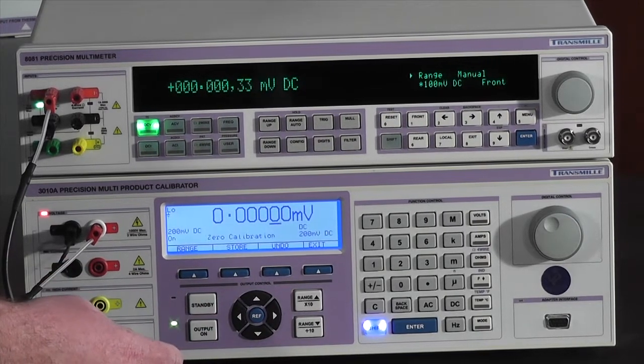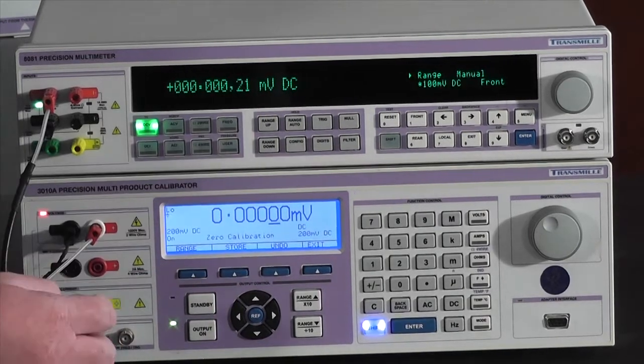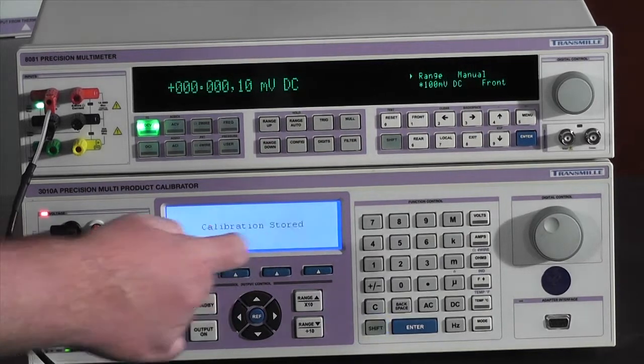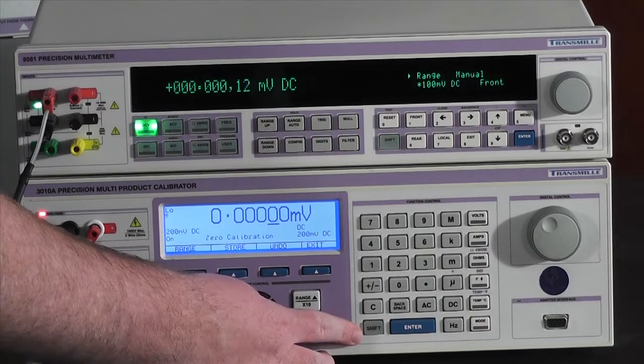I make a smaller adjustment just to get as close to zero as I can. I'm then going to press store and the calibrator will indicate that the new calibration has been stored and the shift light will go out.